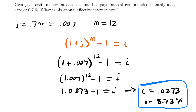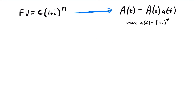Before concluding, there's one more thing to discuss: another way to calculate the annual effective rate. We have the future value formula where the deposit times (1 + i)^N gives future value, and the alternate form where the accumulation at time t equals the accumulation at time zero times the accumulation factor (1 + i)^t. We can use this second form to derive a new helpful equation.